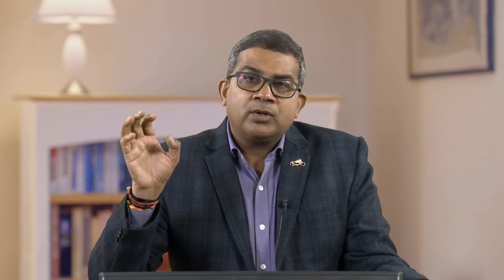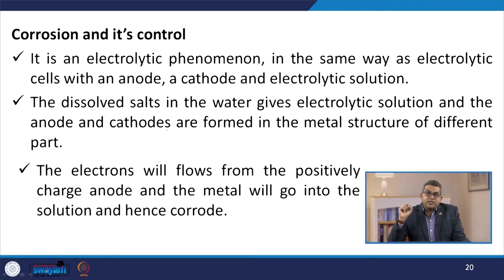Let us talk about corrosion and its control. Corrosion is an electrolytic phenomenon in the same way as electrolytic cells, with an anode, a cathode, and an electrolytic solution. The dissolved salts in the water give the electrolytic solution, and the anodes and cathodes are formed in the metal structure of different parts. Electrons flow from the positively charged anode, and the metal goes into solution and may corrode.